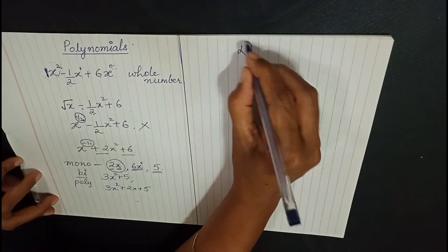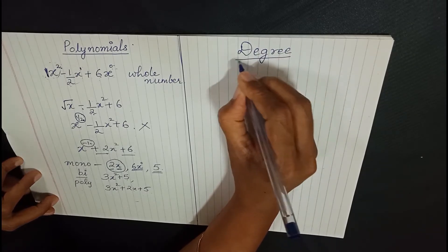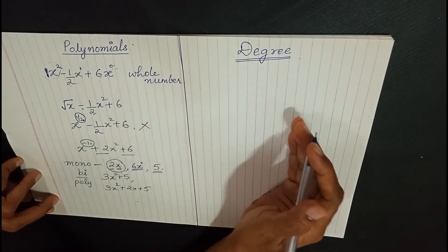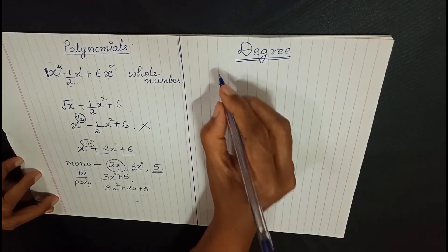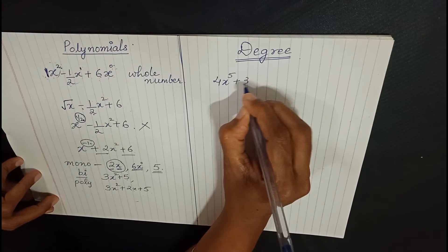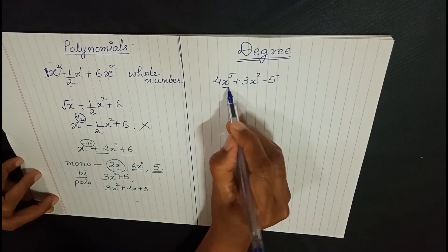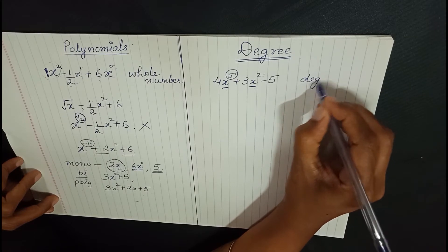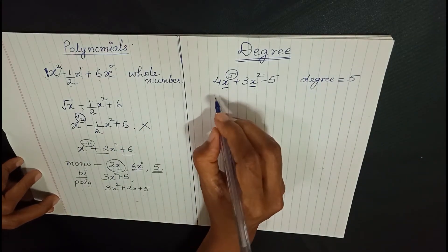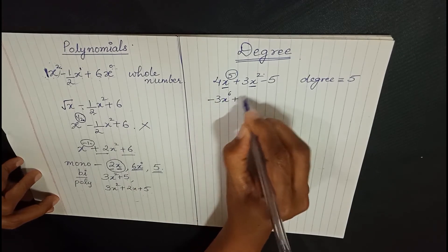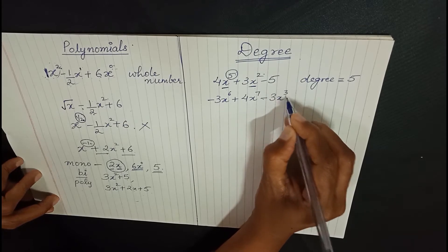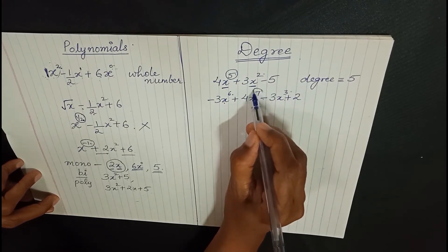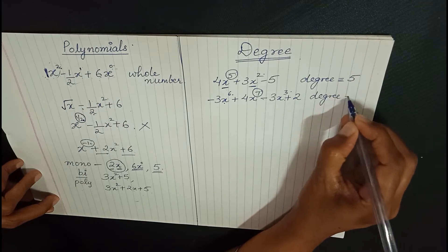Next, let us understand the degree of a polynomial. The degree is the highest power available in that algebraic expression. For example, in an expression with x raised to 5 and x raised to 2, the highest power is 5, so the degree is 5. In another example — minus 3x raised to 6 plus 4x raised to 7 minus 3x cubed plus 2 — the degrees present are 6, 7, and 3; the biggest is 7, so the degree is 7.